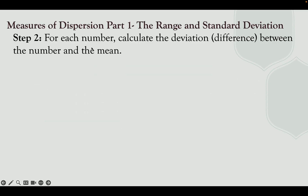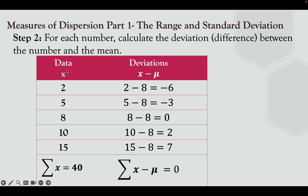Step 2: for each number, calculate the deviation — the difference between the data value and the mean. Write the data in the first column: 2, 5, 8, 10, 15, with a summation of 40. To compute the deviation, subtract each data value from the mean of 8.